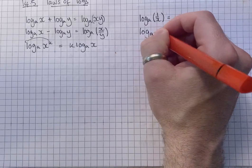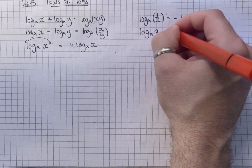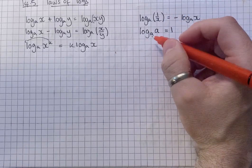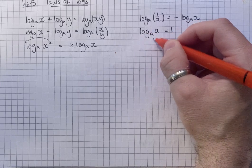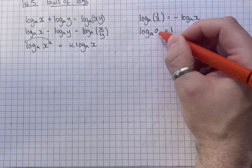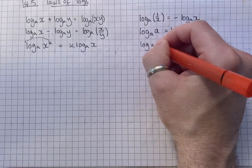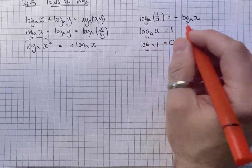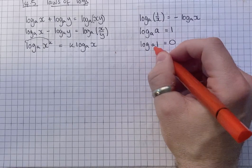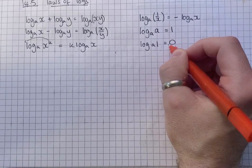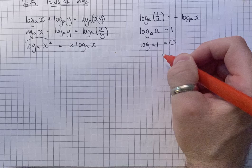Log to the base a of a has to be 1. You can show that really easily. Because if you bring log to the base over, it becomes a to the power of, a is a to the power of 1. And log to the base a of 1 has to be 0. So if you bring this over, log to the base a becomes a to the power of, a to the power of 0 is 1.